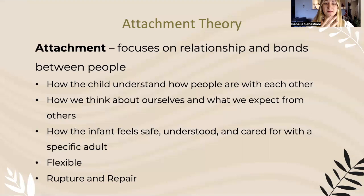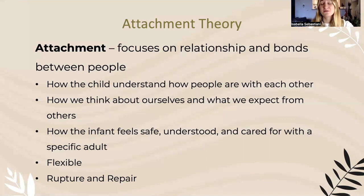Caregivers can facilitate attachment through sensitive and responsive caregiving. However, it is impossible to be perfectly attuned and responsive to an infant's every need. This is where rupture and repair comes into play — the belief that attachments can and will be ruptured. They will get little tears every now and then, but as long as the caregiver apologizes for their mistake and continues to be there for the infant and child, those little tears can be repaired and even fortified. It's impossible to be absolutely perfect, and that's okay.